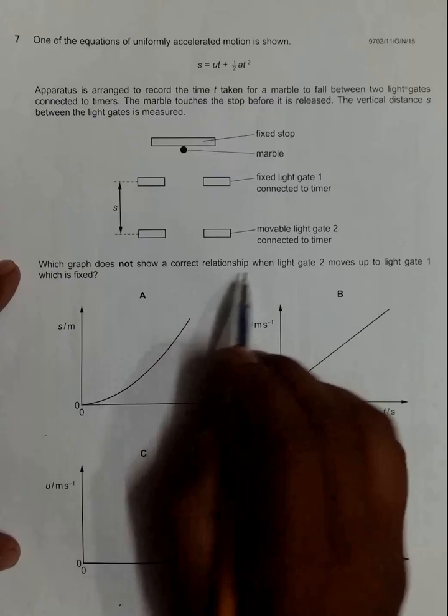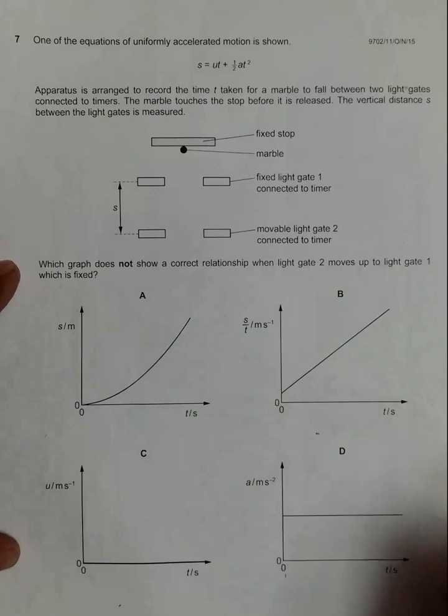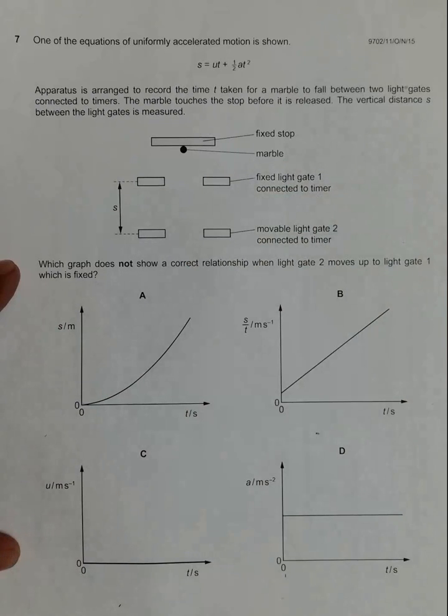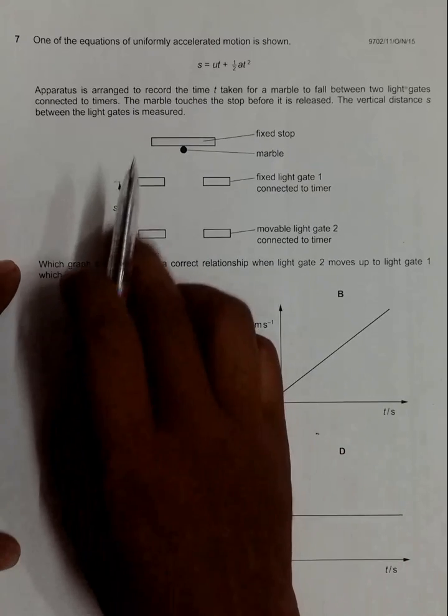Which graph does not show a correct relationship when light gate 2 moves up to light gate 1, which is fixed? So that means if we change this s, we have to find which one of the graphs is not showing the correct relationship. Let's first go through here.